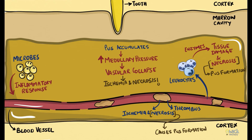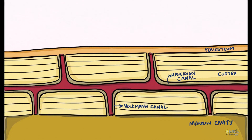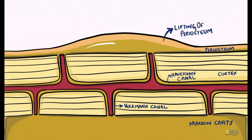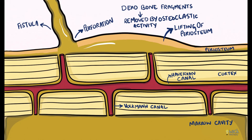Pus accumulating inside the medullary cavity can also compress the inferior alveolar nerve, causing paresthesia. Further, pus moves through the medullary spaces and reaches the cortex, where it starts to trickle through the Volkmann canals and Haversian systems to accumulate below the periosteum. This compromises the periosteal blood supply and may cause lifting and perforation of the periosteum, causing pus to accumulate under the mucosa, leading to fistula formation and drainage of pus in the oral cavity. When bone fragments die due to ischemia, these fragments are separated from normal bone by osteoclastic activity and are called sequestra.